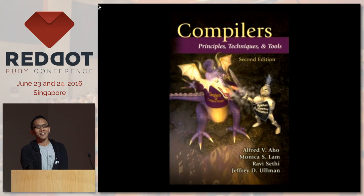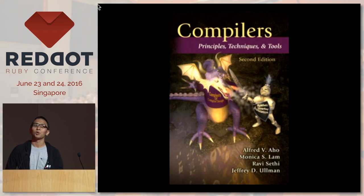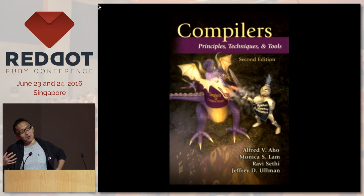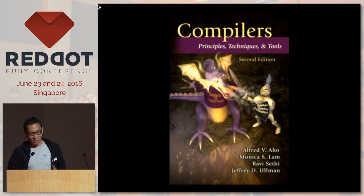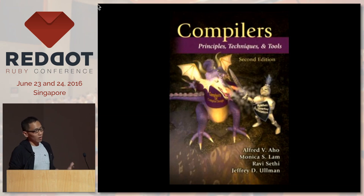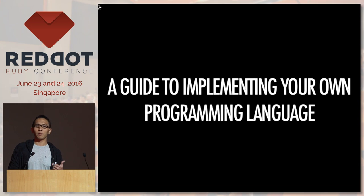It's a very famous university textbook used for compilers courses, also known as the Dragon Book. People think that when they want to implement a programming language or write a compiler, they have to read this textbook. But today I'm going to show you that you don't — I'm going to show you how easily you can implement your own programming language in our favorite language, Ruby.